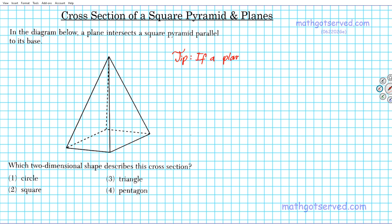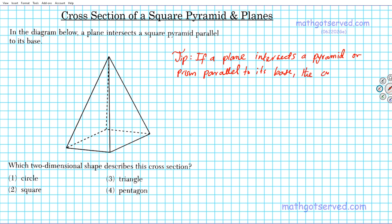If a plane — this is like a flat surface like a piece of paper — intersects a pyramid (it also applies to prisms too) parallel to its base, the resulting cross section formed is the shape of the base.